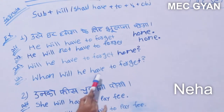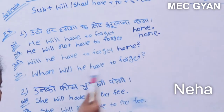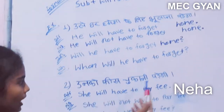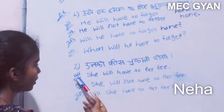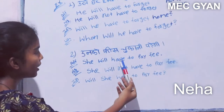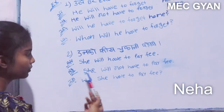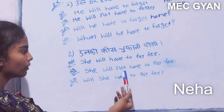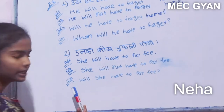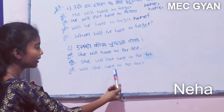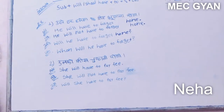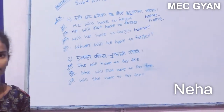Second example — affirmative: he will have to pay fee. Negative: he will not have to pay fee. Interrogative: will he have to pay fee? Keep watching MSc.